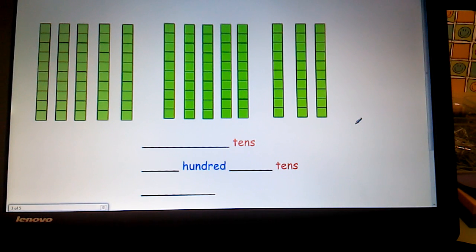Let's do another one. Again, here is a different array of longs. How many tens do I have all together? I can tell from the picture that I have thirteen. Can I make a group of hundred here?